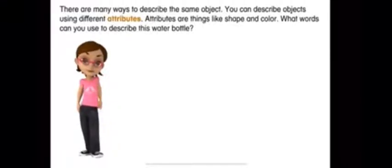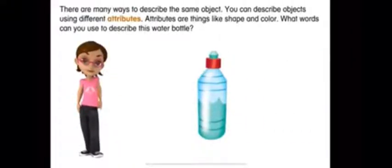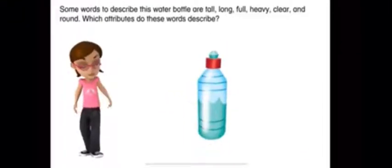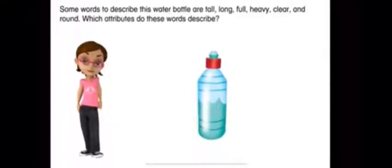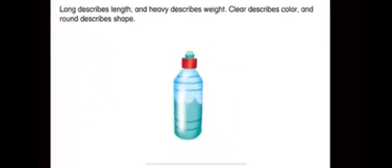There are many ways to describe the same object using different attributes — things like shape and color. What words can you use to describe this water bottle? Some words to describe this water bottle are: tall, long, full, heavy, clear, and round. Which attributes do these words describe? Long describes length, heavy describes weight, clear describes color, and round describes shape.